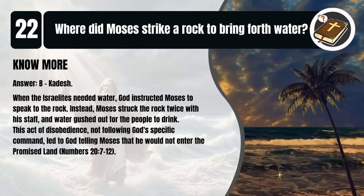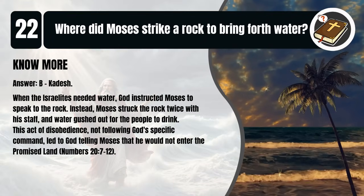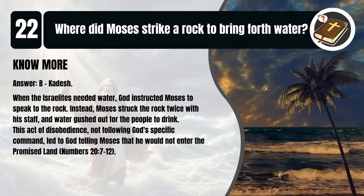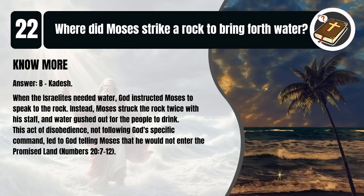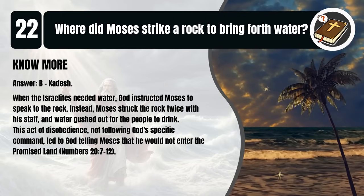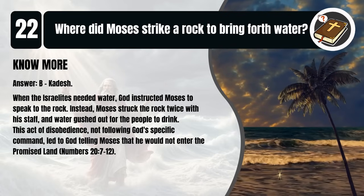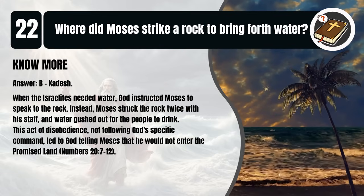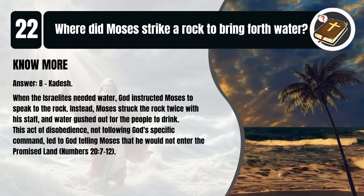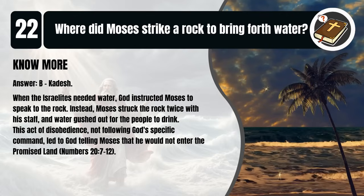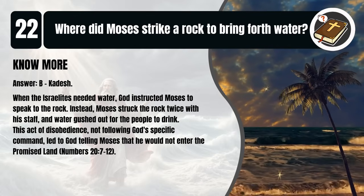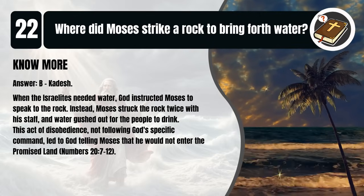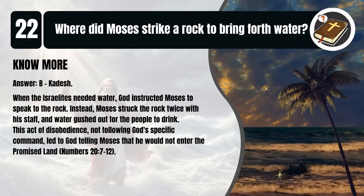That's B. Kadesh. When the Israelites needed water, God instructed Moses to speak to the rock. Instead, Moses struck the rock twice with his staff, and water gushed out for the people to drink. This act of disobedience, not following God's specific command, led to God telling Moses that he would not enter the promised land. Numbers 20:7-12.